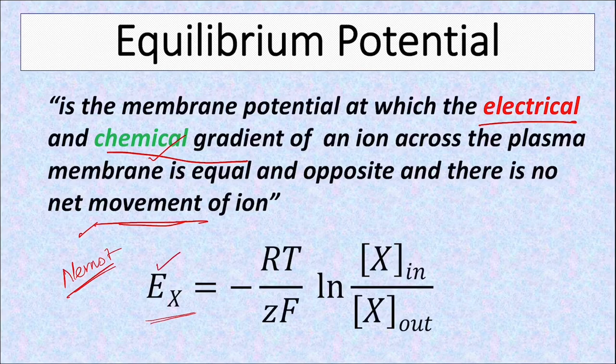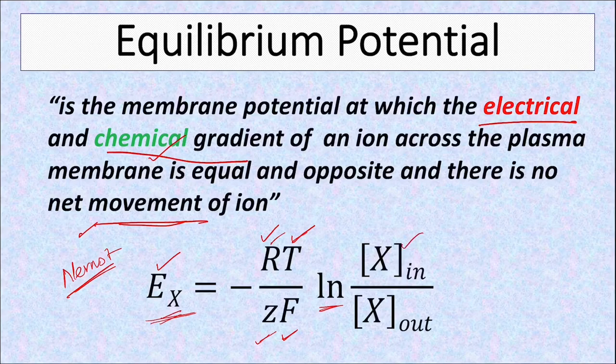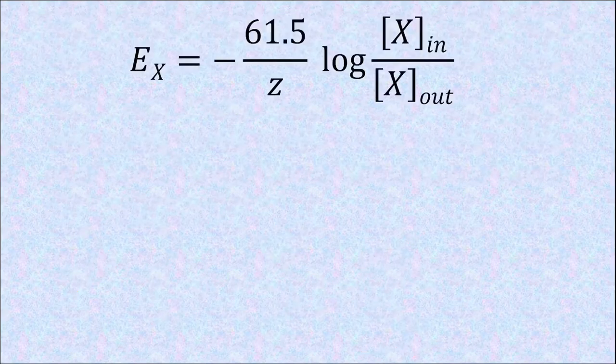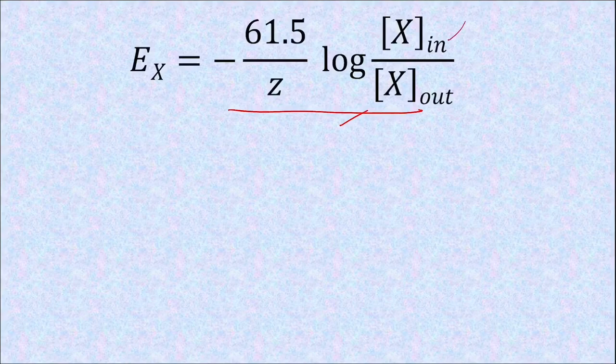Here, EX stands for equilibrium potential of an ion X, which equals RT by ZF—that is gas constant R, T is the absolute temperature, Z is the valency, and F is Faraday's constant—times the natural log of concentration of ion inside divided by outside. We can simplify this equation by adding all these values to get minus 61.5 divided by Z, the valency, times log of ion concentration inside by outside.